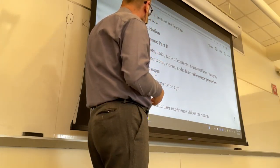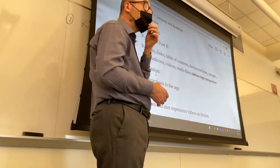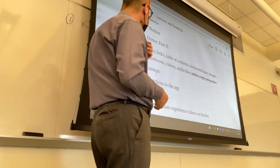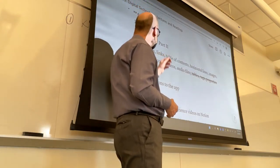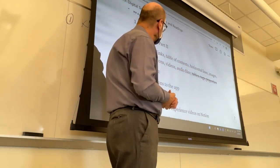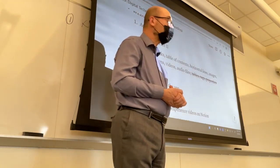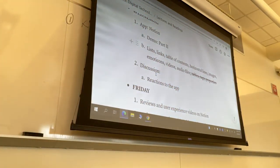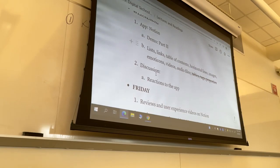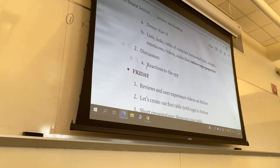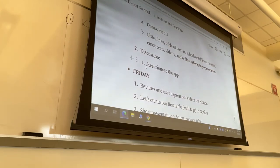I want to show you how to create alphanumeric or bulleted lists in Notion, how to place a link, a table of contents, horizontal lines, how to add images, videos, audio files, and emoticons. There is also one more thing — a second way of creating a new page inside Notion itself. If there is time I'd like to hear some of your reactions, otherwise we'll do that on Friday, when we will all be testing and exchanging ideas and reactions.